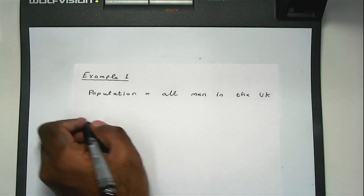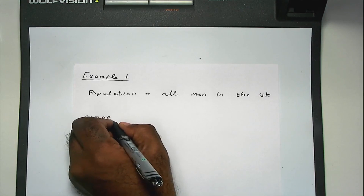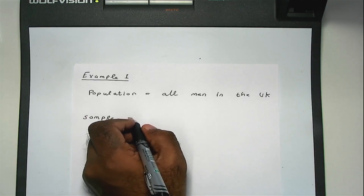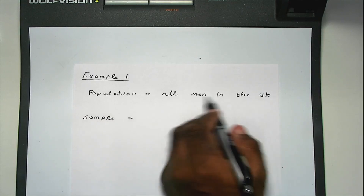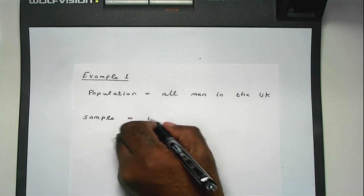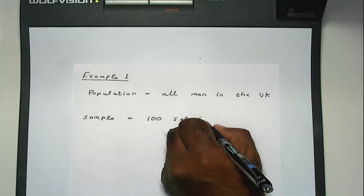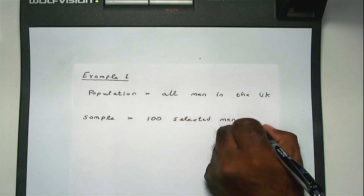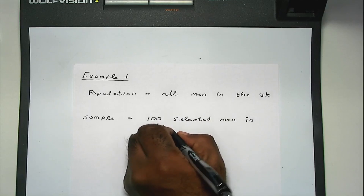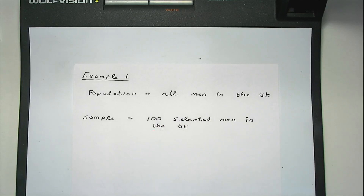The sample is a subset of the population. So instead of accessing all men in the UK, suppose you select 100 men in the UK. The sample is a subset of the population, and it's something that you can access physically.